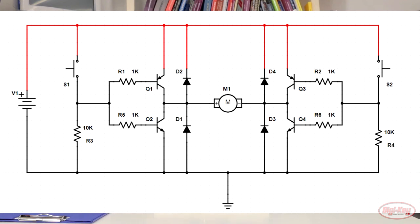If S1 is on and S2 is off, then current will flow through Q3, through the motor, and then through Q2. If S1 is off and S2 is on, then current will flow through Q1, then through Q4 via the motor.